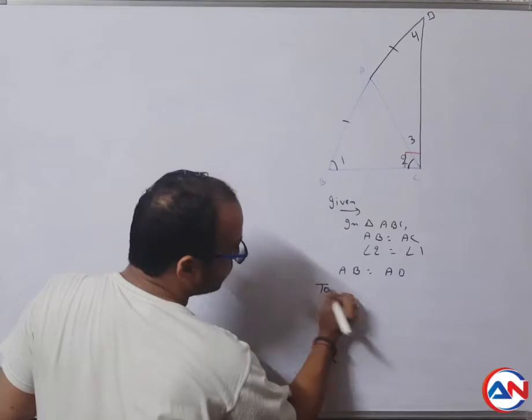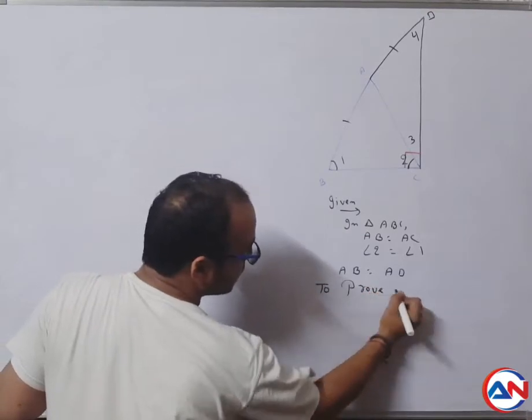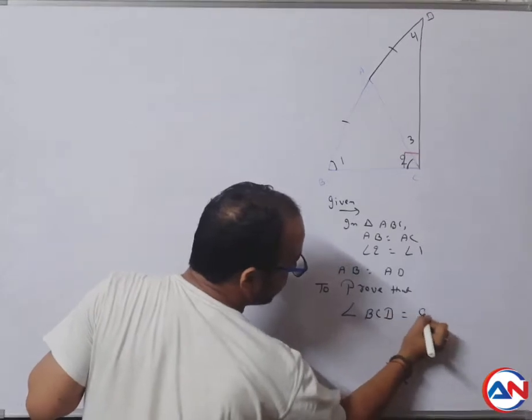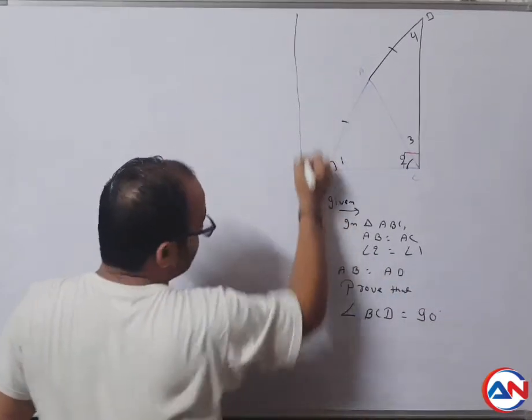You have to prove that angle BCD equals to 90 degrees. Clear?